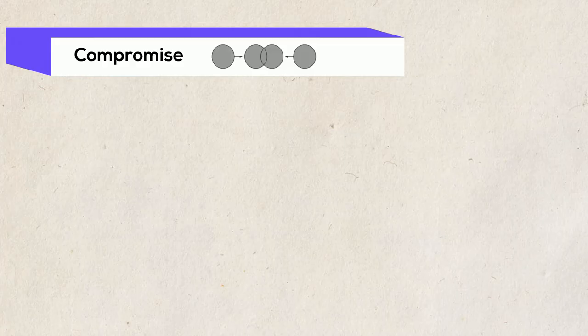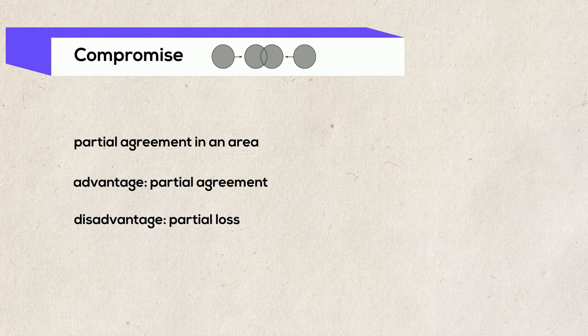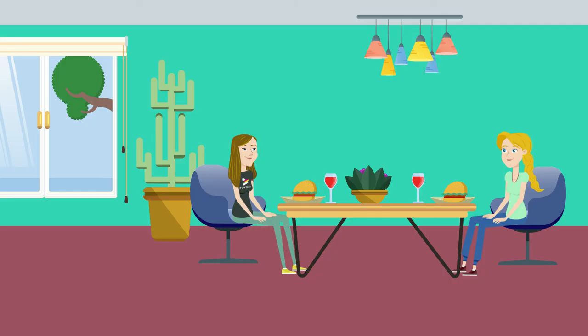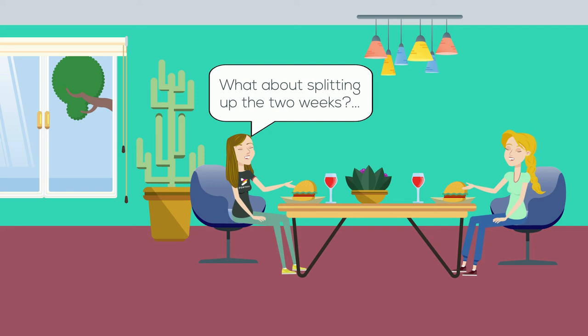The compromise represents a partial agreement in a selected area. The advantage of this option is also its disadvantage, because an arbitration based on compromise is only a partial agreement and, if viewed negatively, the solution is a partial loss for both actors. When the parties could find a compromise, a distinction is made between lazy and good compromise. Let's have a look at the following scene. 'I really want to go on vacation to the mountains this year.' 'I finally want to see the sea again and sunbathe on the beach.' 'What about splitting up the two weeks? We could spend one week by the sea and one in the mountains.' 'That sounds good.'